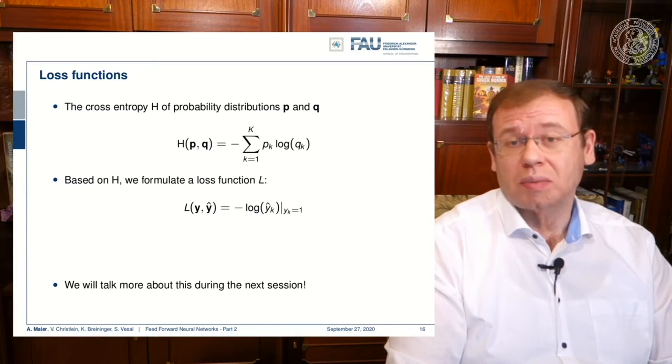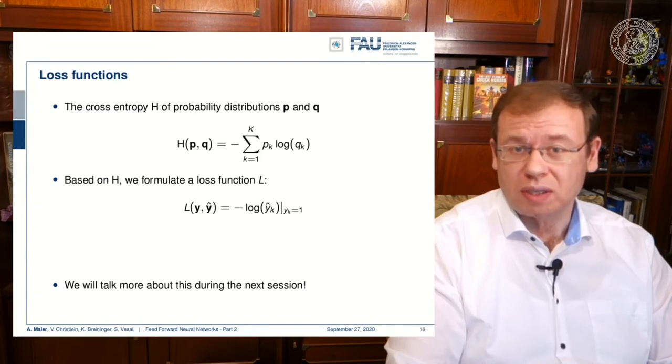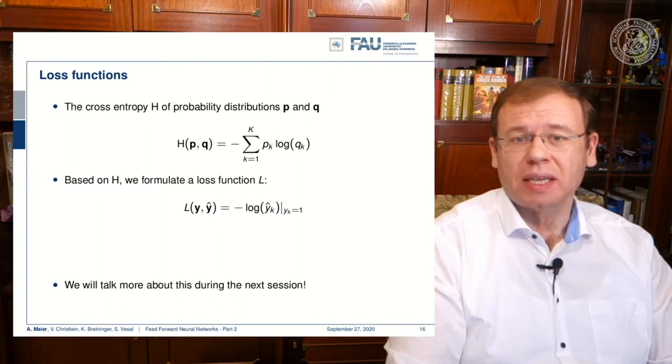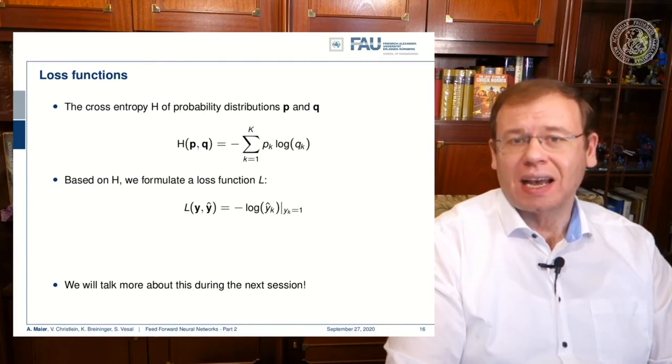The cross entropy is computed between two probability distributions. So if you have your ground truth distribution and the one that you're estimating, then you can compute the cross entropy in order to determine how well they are connected, it is how well they align with each other.